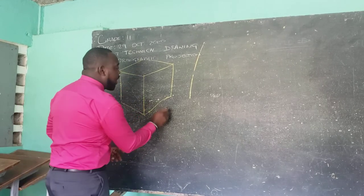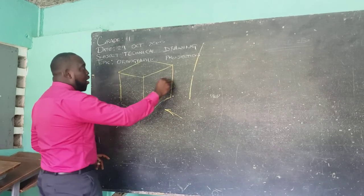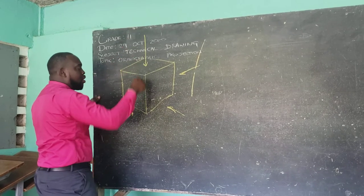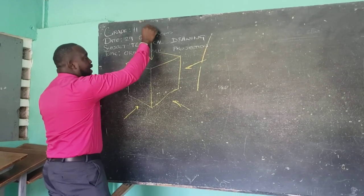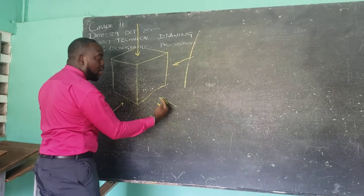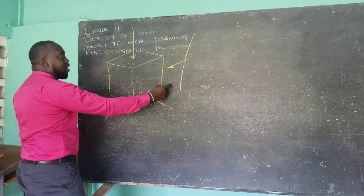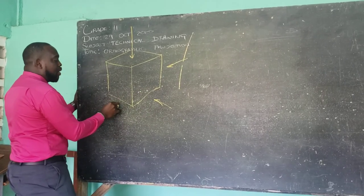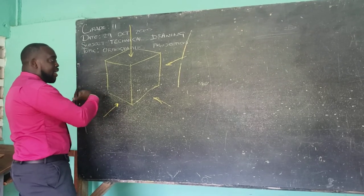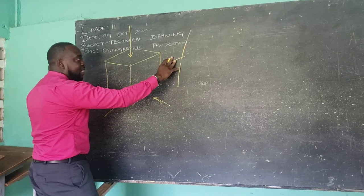However, in orthographic, we are expected to stand in different positions, viewing this object at 90 degrees. From above looking down, we are able to see the plan. From the front, looking directly ahead, we are able to see the front elevation. And if you stand to either of the sides, you are able to see what is called the end elevation — a left-end elevation from the left side, and a right-end elevation from the right side.